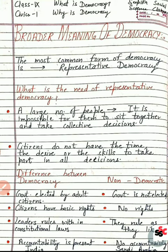जैसे Saudi Arabia में women को voting rights नहीं मिले थे — non-democratic countries में ऐसा होता है। तो students, democracy का concept इतना clear है कि हम easily judge कर पाते हैं democracy और non-democracy में — जो चीज़ें democracy में हैं वो non-democratic country में नहीं हैं।